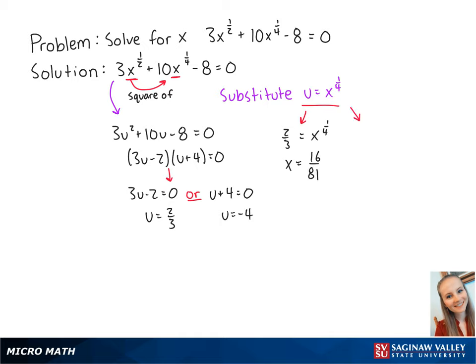Now we plug in u equals negative 4. This gets us negative 4 equals x to the one-fourth power. Any number raised to the one-fourth power cannot be equal to a negative number, so this is an extraneous solution.